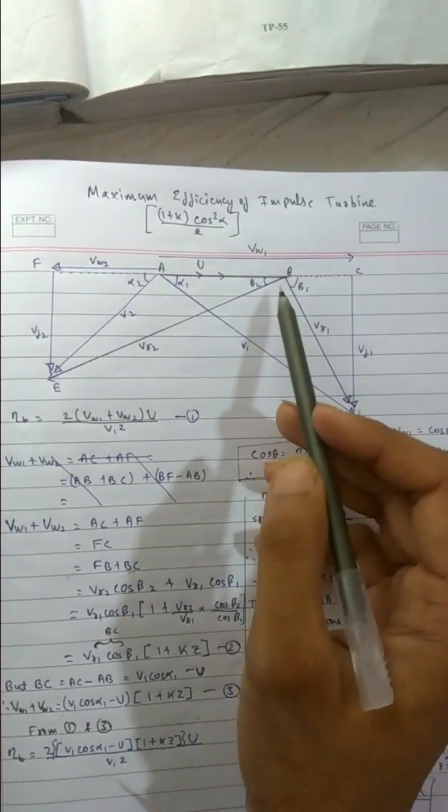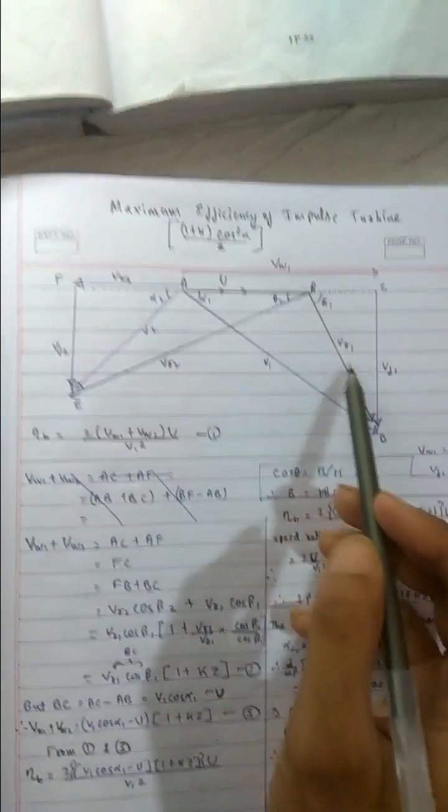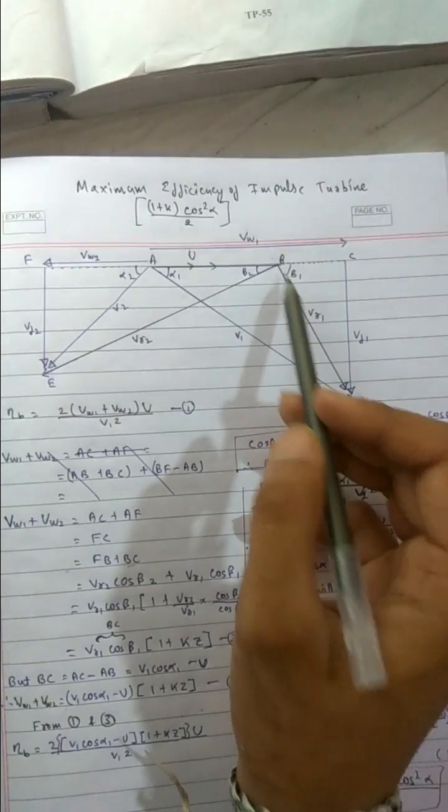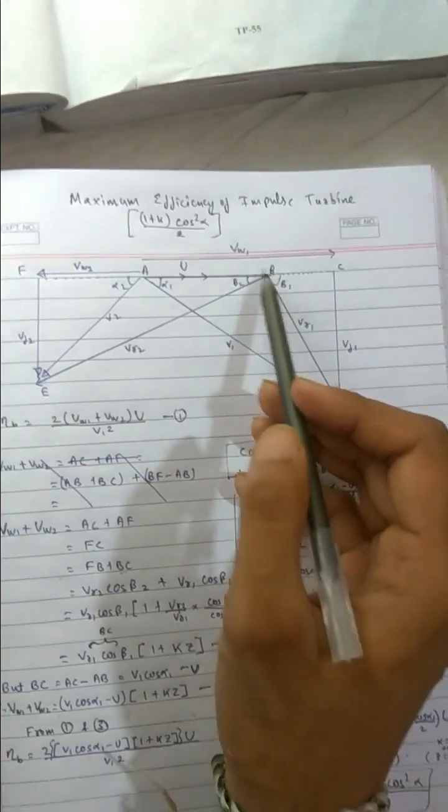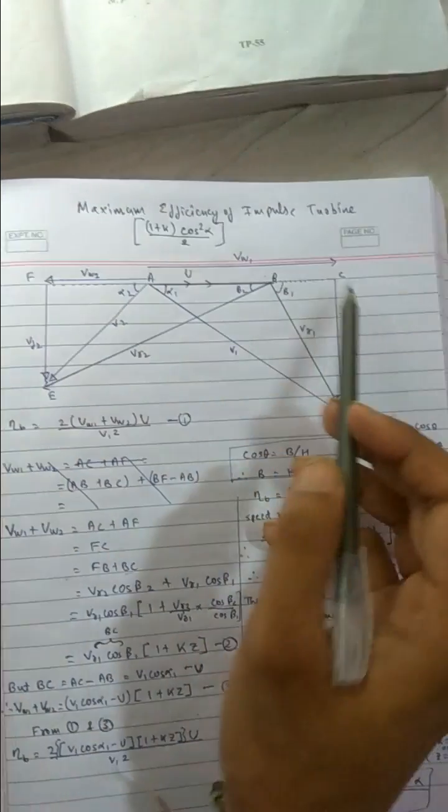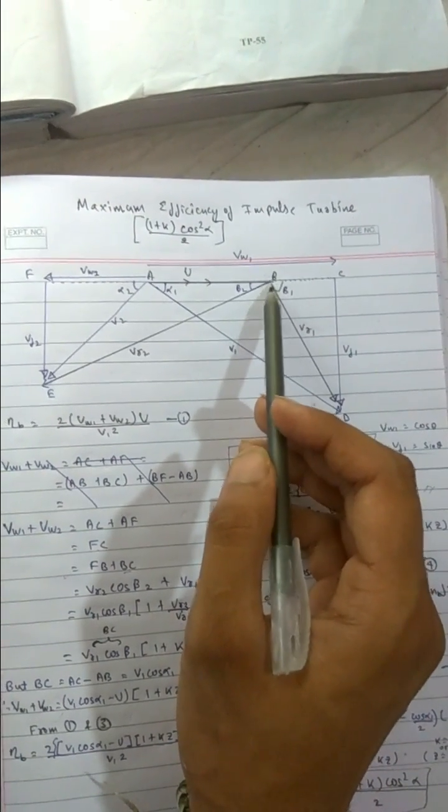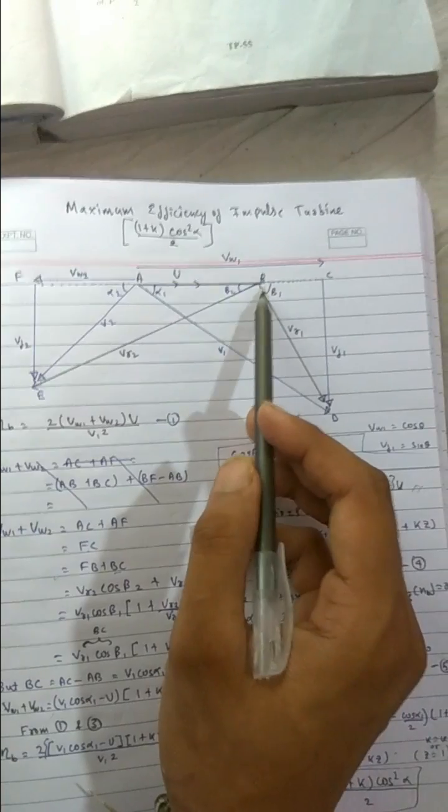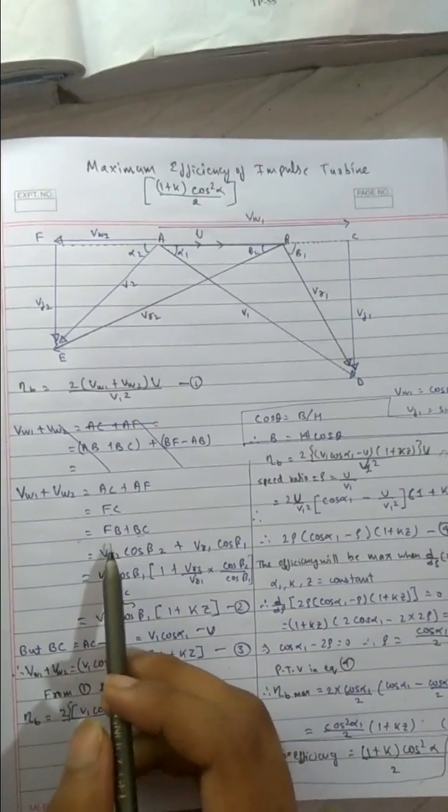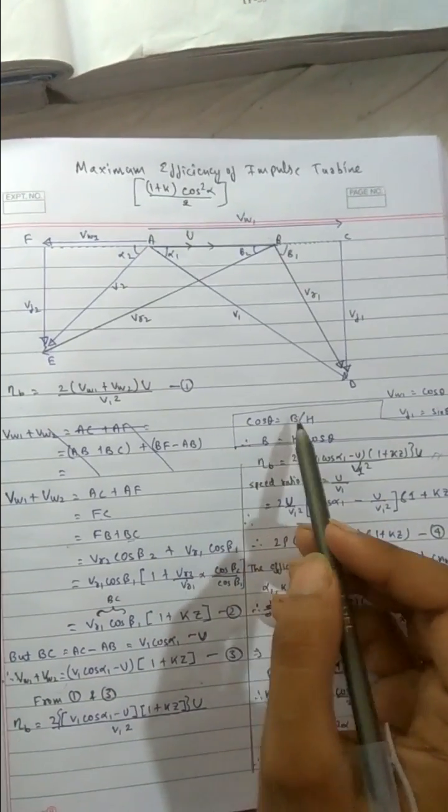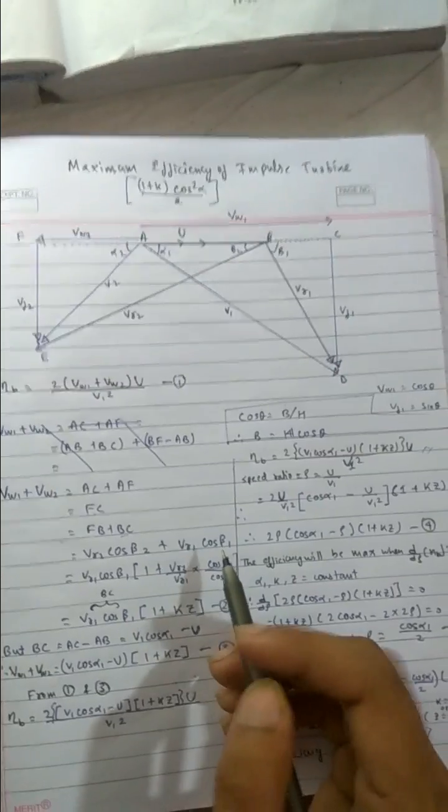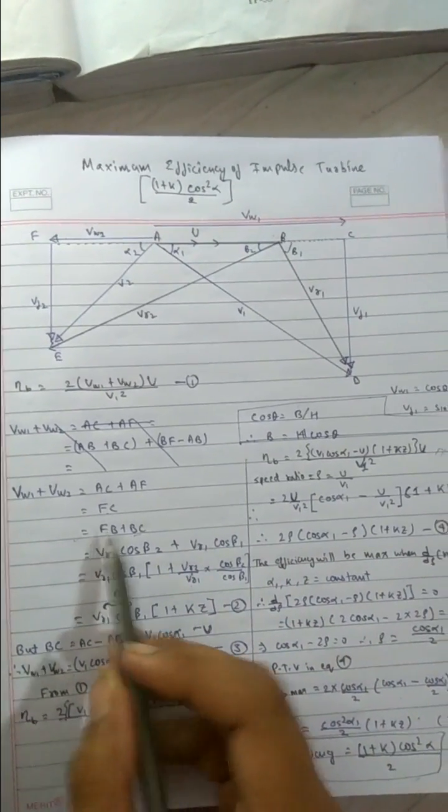Now remembering that the relative velocity we have split from this place. For those who have not seen my video check the last one. This is our VR1, this is our VR2 splitting from this end. So this FC is divided in 2 half from this place. So FB plus BC. Now one more thing: cos theta equals to base by hypotenuse, so base equals to hypotenuse cos theta.